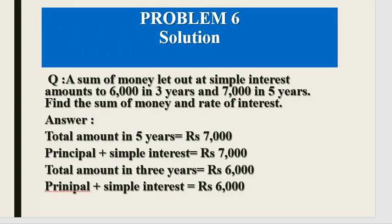In Problem 6, a sum of money is placed on simple interest and amounts to Rs. 6,000 in 3 years. The same sum amounts to Rs. 7,000 in 5 years.